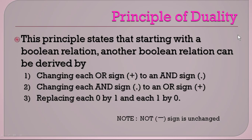The principle of duality states that starting with a boolean relation, another boolean relation can be derived by: changing each OR sign (plus sign) to an AND sign (dot sign); and changing each AND sign (dot) to an OR sign (plus). Also, replacing each zero by one and each one by zero.